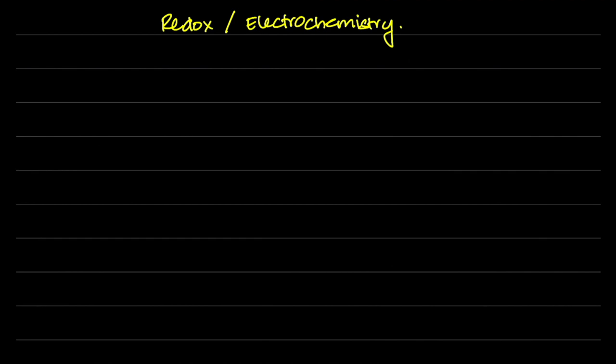The basic idea is that chemical reactions generally have energy exchanges — they either give it out or take it in. Most of the time, energy is given out as heat, which we study using enthalpy changes. But in redox reactions, you can also give out electrical energy, and that's what this chapter focuses on.